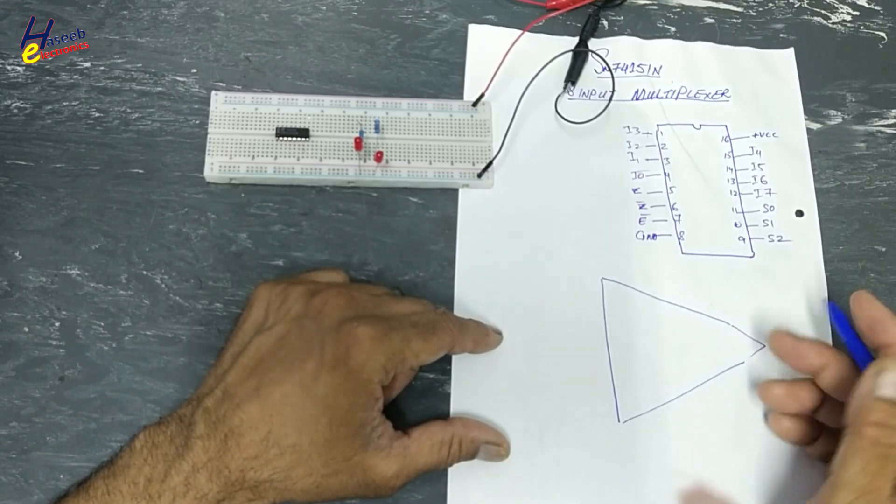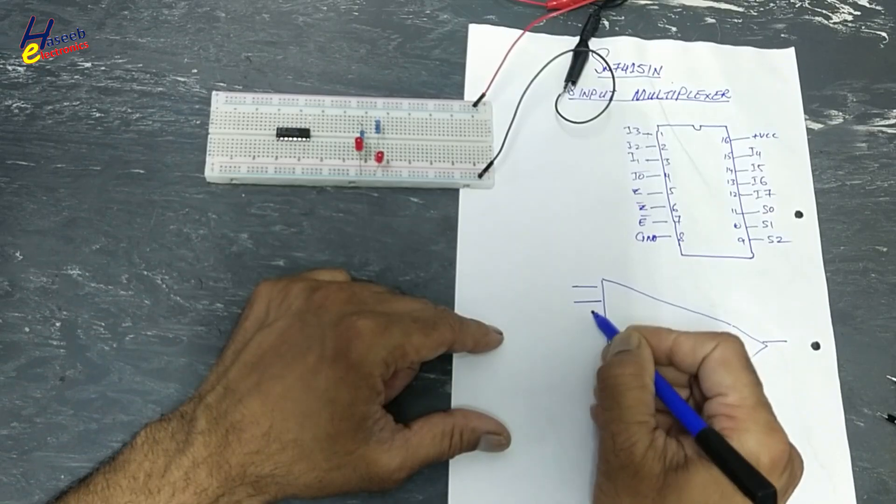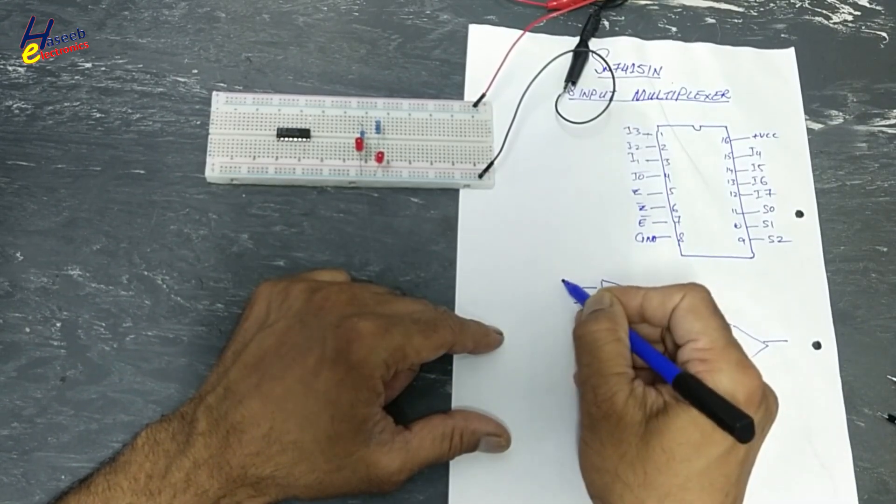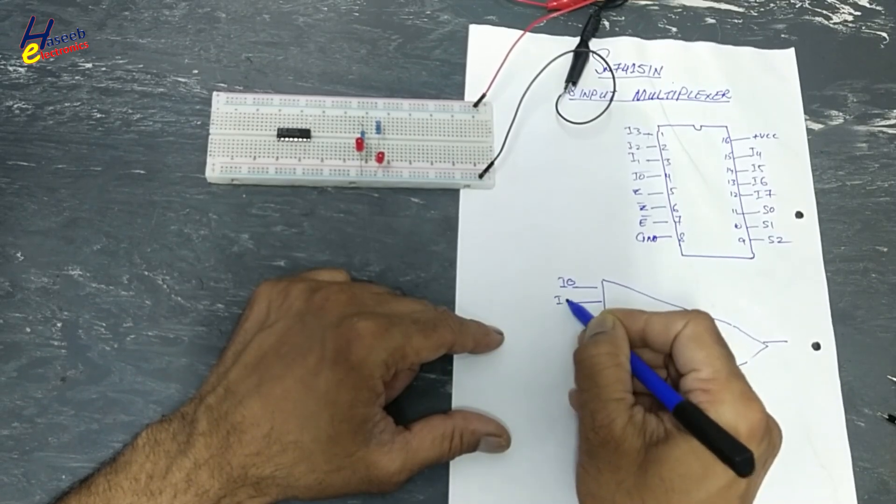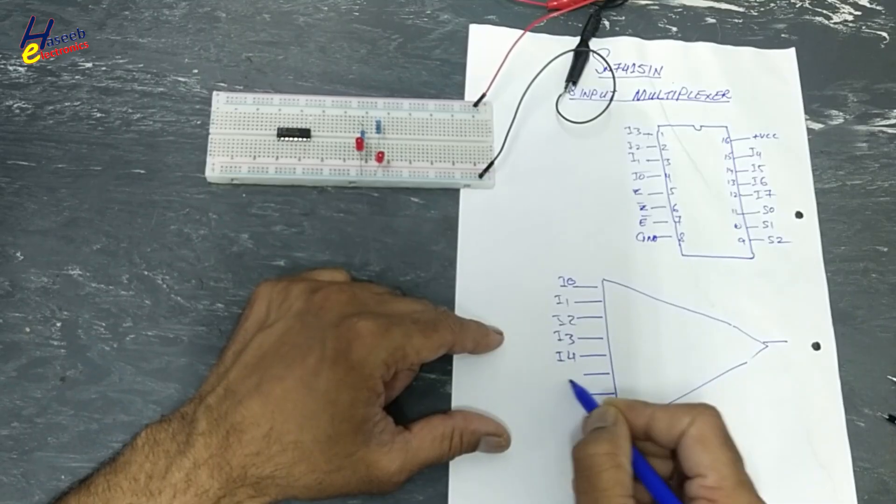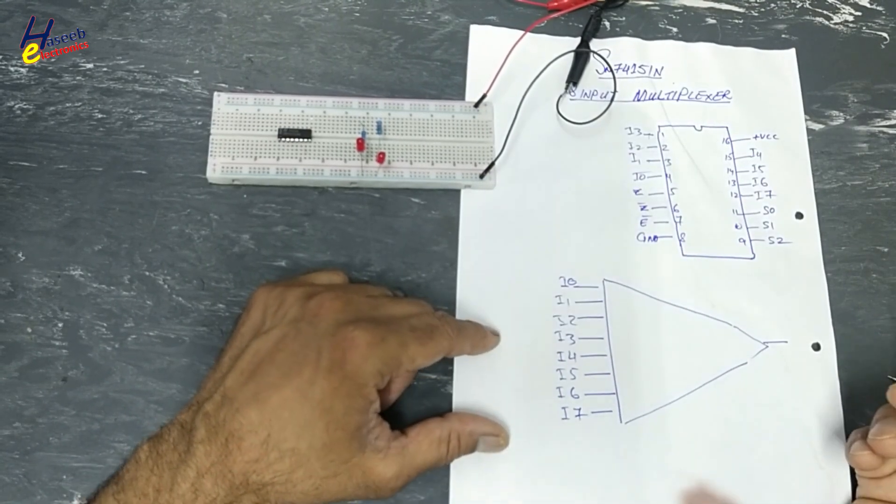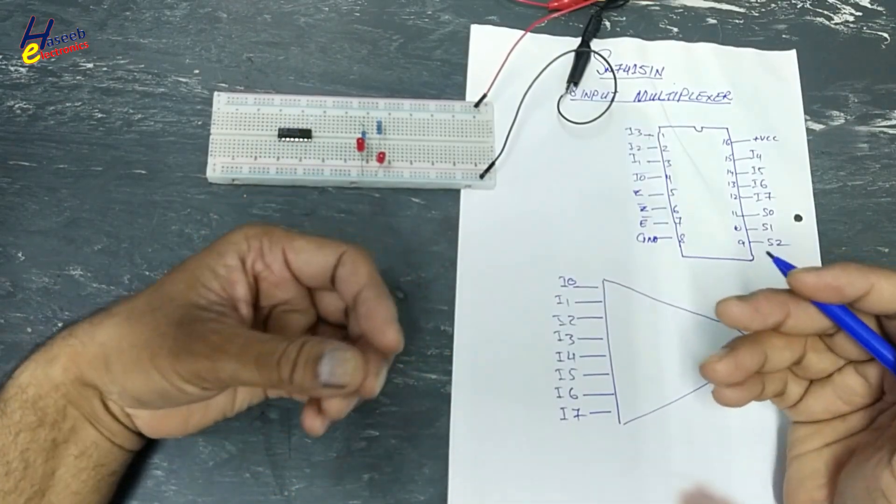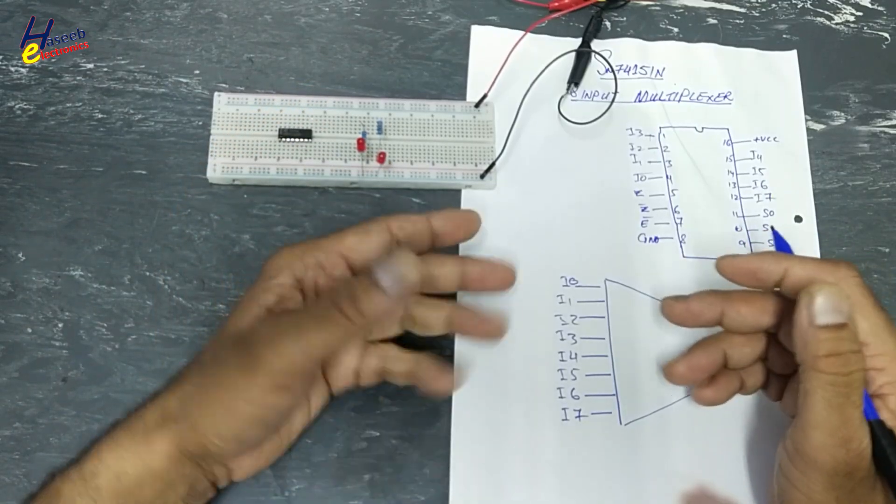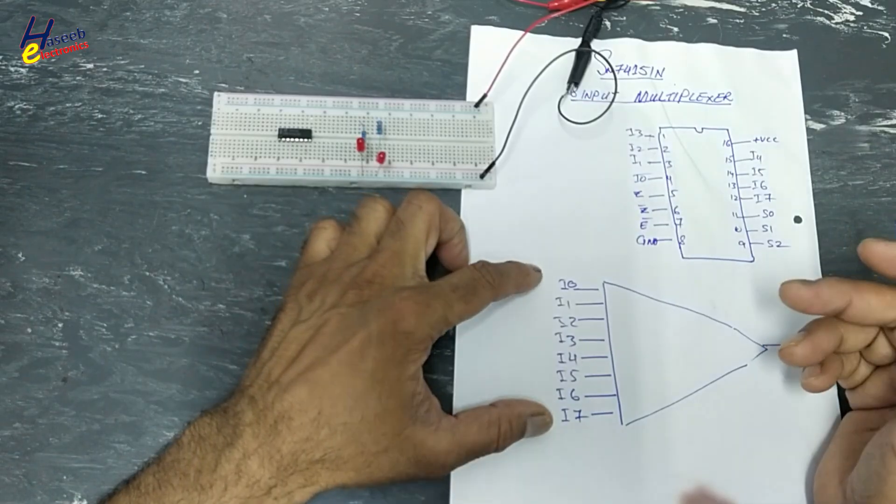Let's suppose I have eight signals here. And this block is multiplexer. I need output. One, two, three, four, five, six, seven, eight. I zero, I one, I two, I three, I four, five, I six, I seven. These seven signals, any frequency signal or logic high logic input, maybe any sensor that is providing TTL input that is reaching here.